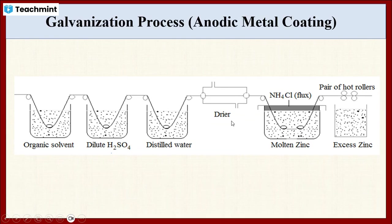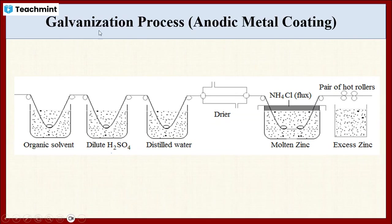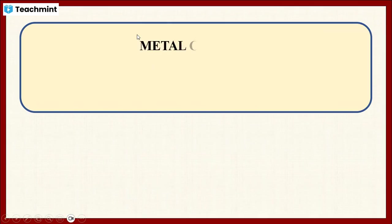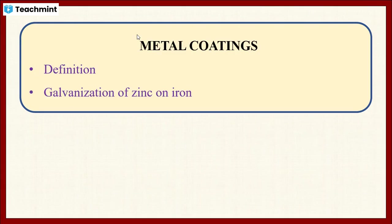In summary, the metal steel is dried using a dryer, then passed into a molten zinc bath at 425 to 430 degrees Celsius, and finally the zinc-coated metal steel is passed through a pair of hot rollers to remove excess zinc and produce a thin film of uniform thickness. It is then cooled down. This is the galvanization process. In this video, we discussed the definition of metal coating and the galvanization of zinc on iron.